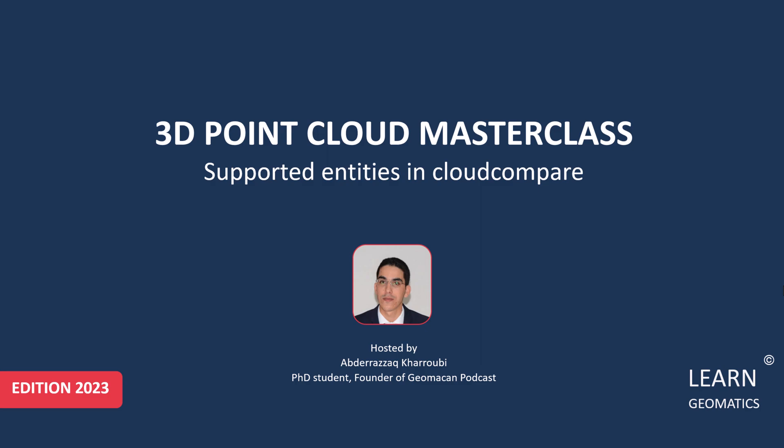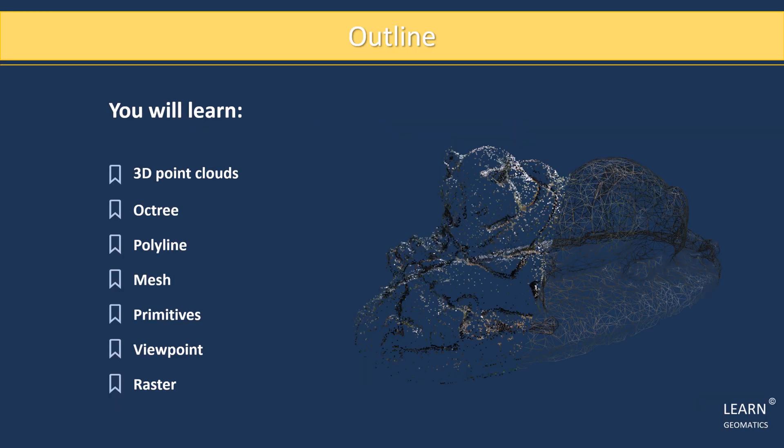Welcome to this video about entities in Cloud Compare. We will explore and explain some of the fundamental entities in Cloud Compare that are essential for processing and analyzing point clouds and meshes. We will cover topics such as 3D point clouds, Octree, Polyline, Mesh, Primitives, Viewpoint, and Raster. By the end of this video, you will have a good understanding of these entities and how they can be used in Cloud Compare. So, let's get started.